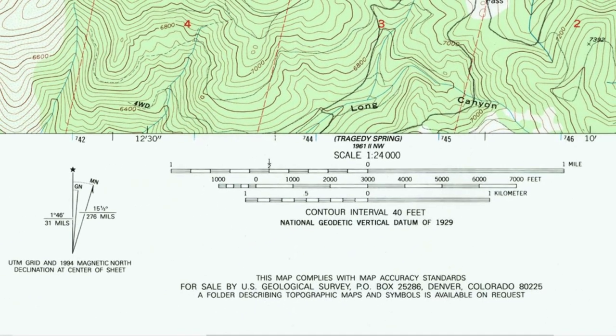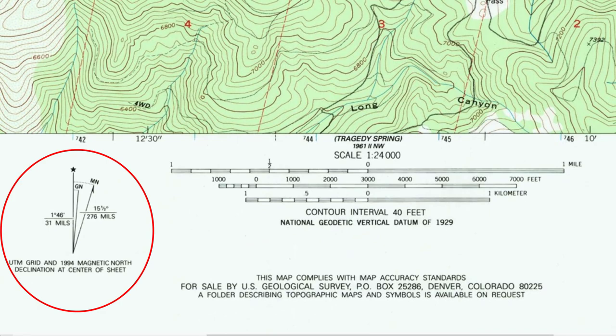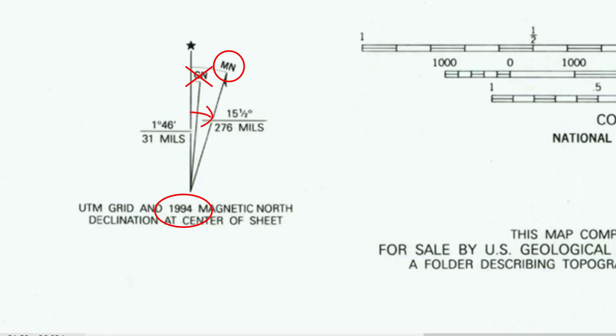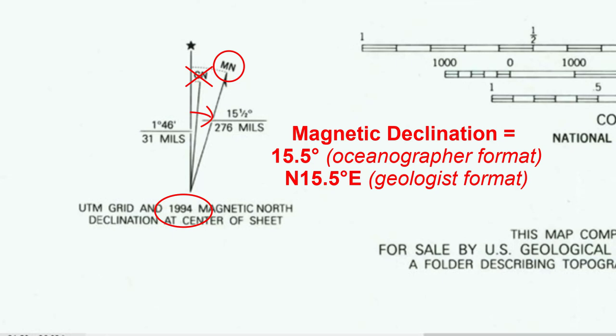Down at the bottom of the map, these arrows indicate the magnetic declination at this location when the map was made. The star points to true north. GN is grid north, related to the grid system we're ignoring. MN refers to magnetic north — the direction magnets pointed in this location in 1994 when this map was made. The angle between true north and magnetic north is a bearing. An oceanographer would write it as 15.5 degrees, meaning 15.5 degrees clockwise from north. A geologist would write it as north 15 degrees east, meaning start facing north and rotate 15 degrees to the east.